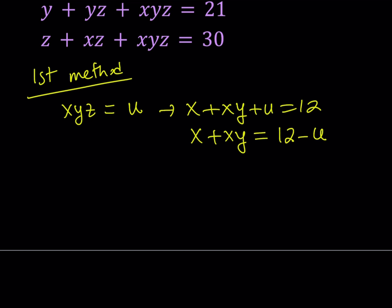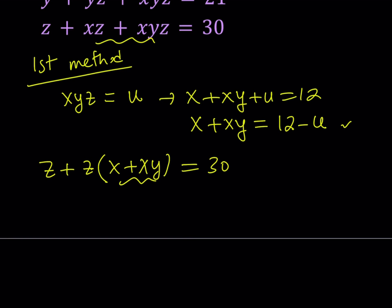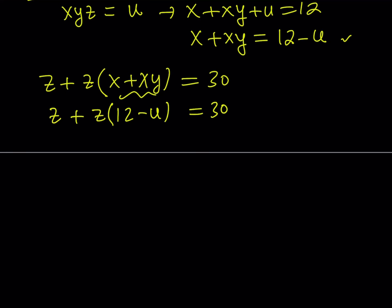The third equation, if you isolate the z and take care of these two terms and factor out the common term, not the xz but just the z, since it starts with z, I will take out another z here. That's going to be x plus xy and that is going to be 30. Now this is where we use the x plus xy. You can replace x plus xy with 12 minus u and that's going to give you z plus z times 12 minus u equals 30. And then from here, you can solve for z and write z in terms of u. So if you take out a z here, that is going to be 13 minus u equals 30. And from here, you can write z equals 30 over 13 minus u.